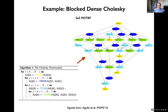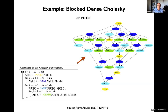Even for a simple problem, this graph is fairly large. You can imagine that for realistic problems, these things can potentially be far too large to instantiate at any given time.